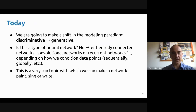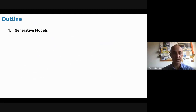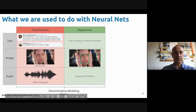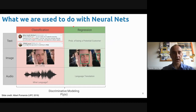Let's first define generative models. So far, basically, we've been looking at two types of problems. Most of the time, we've been looking at classification or regression problems. So when we're looking at text, maybe we're trying to find the sentiment of a tweet, or looking at an image and figuring out what's the sentiment, or what's the language that's being spoken.